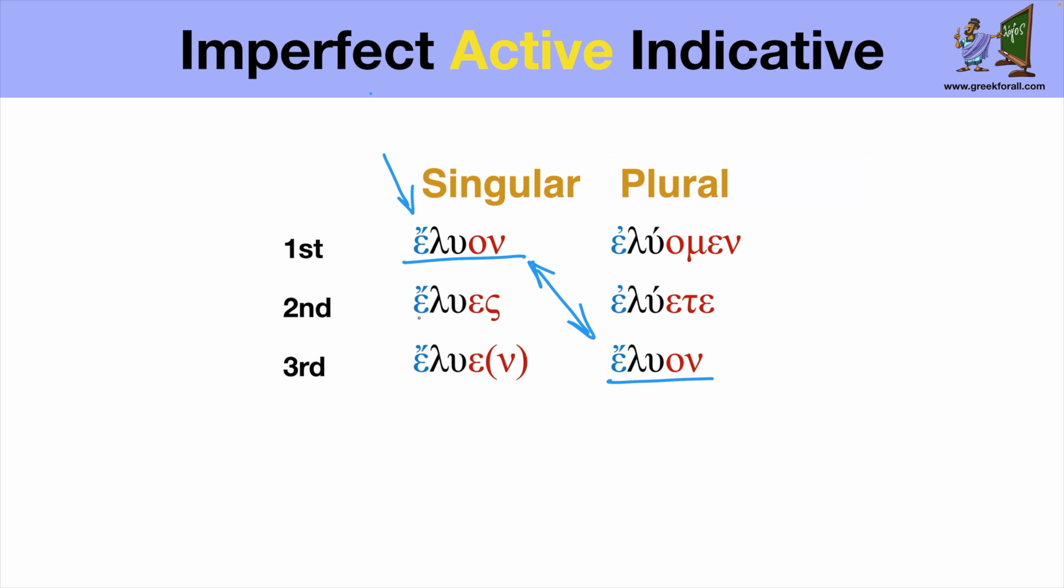So in brief, if you see the augment and one of these endings, you know that your verb is imperfect, active, indicative, and you should translate it accordingly.